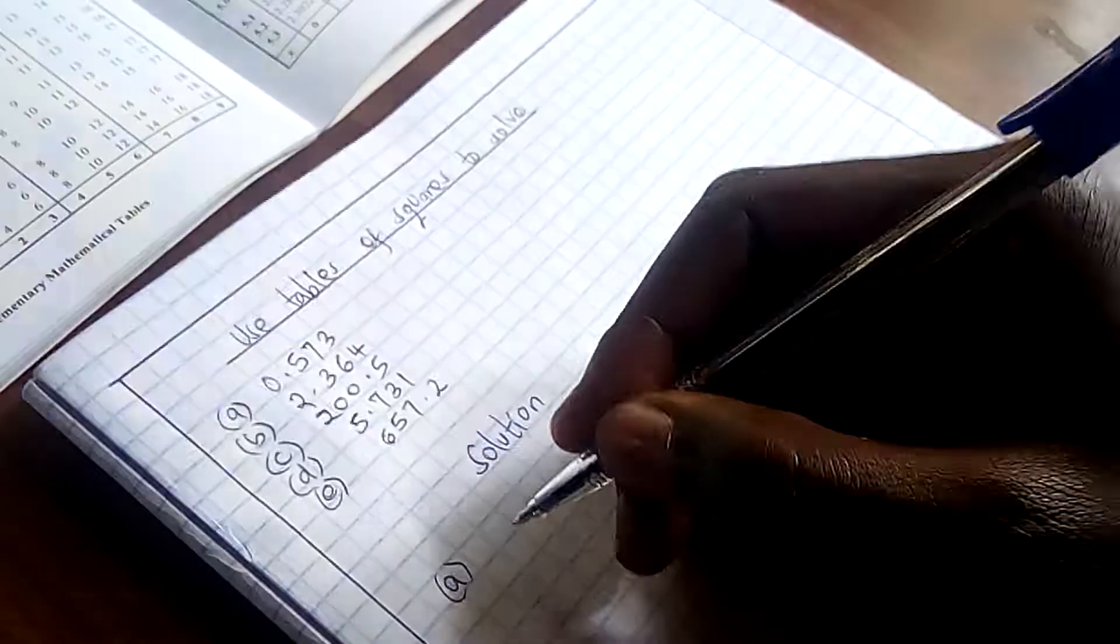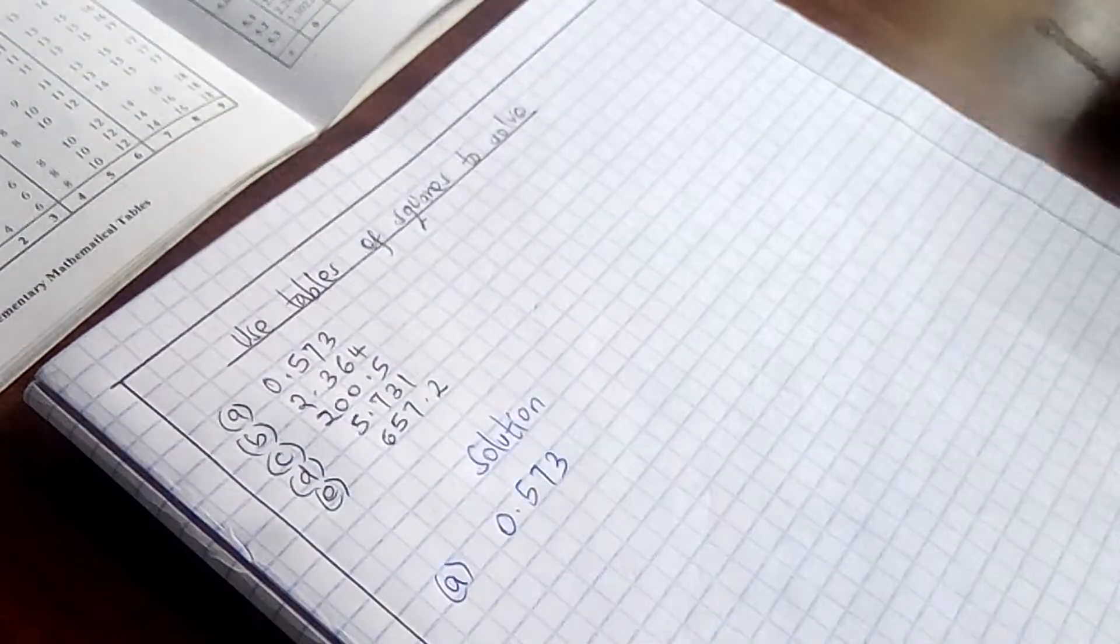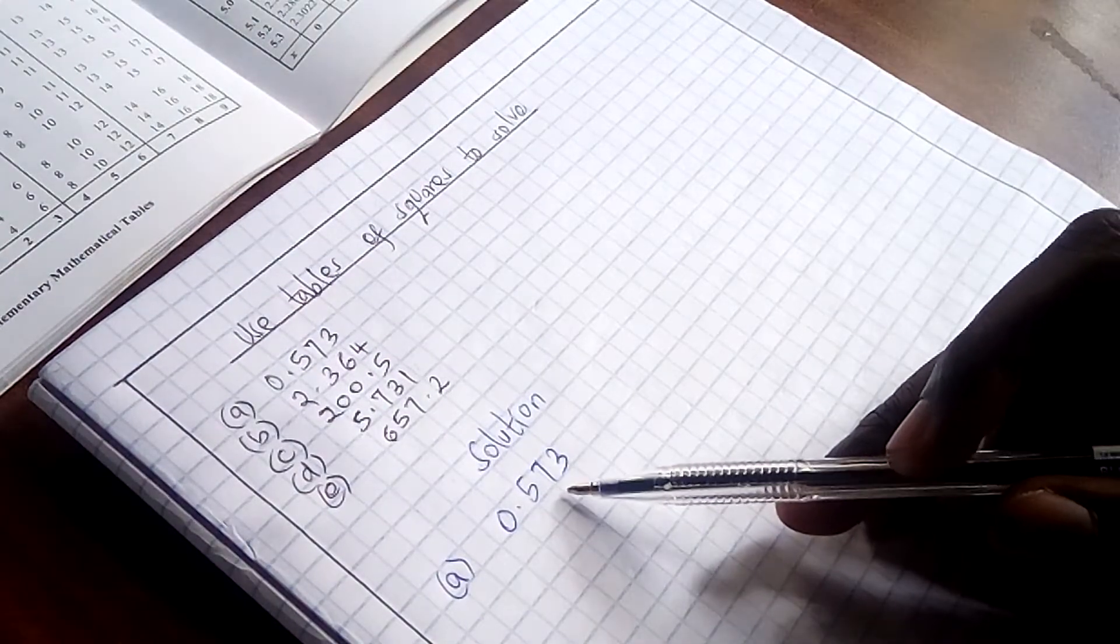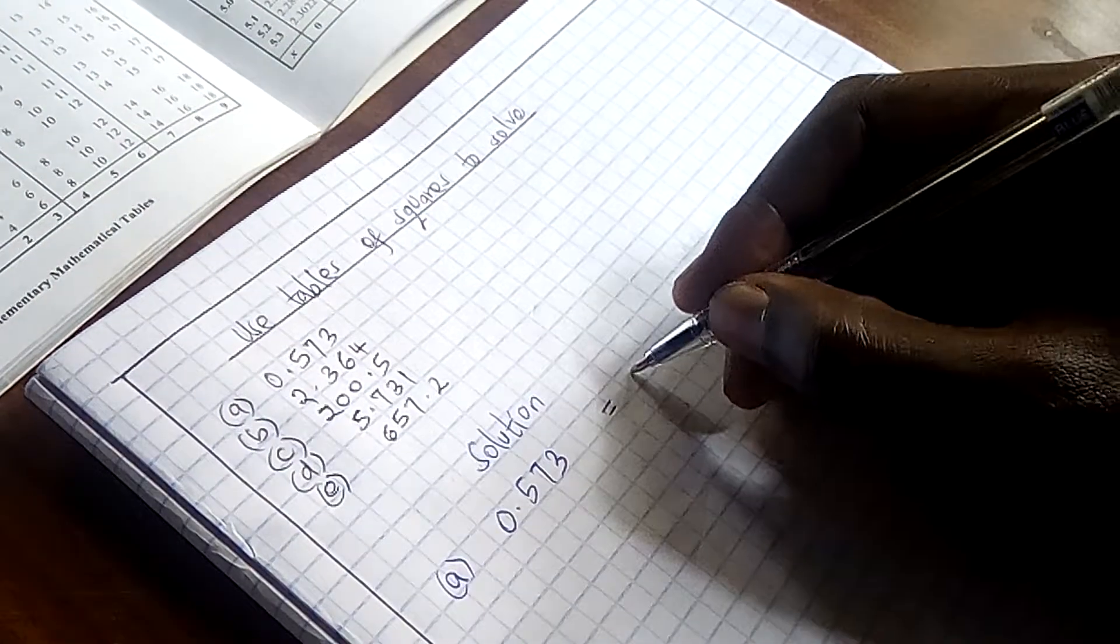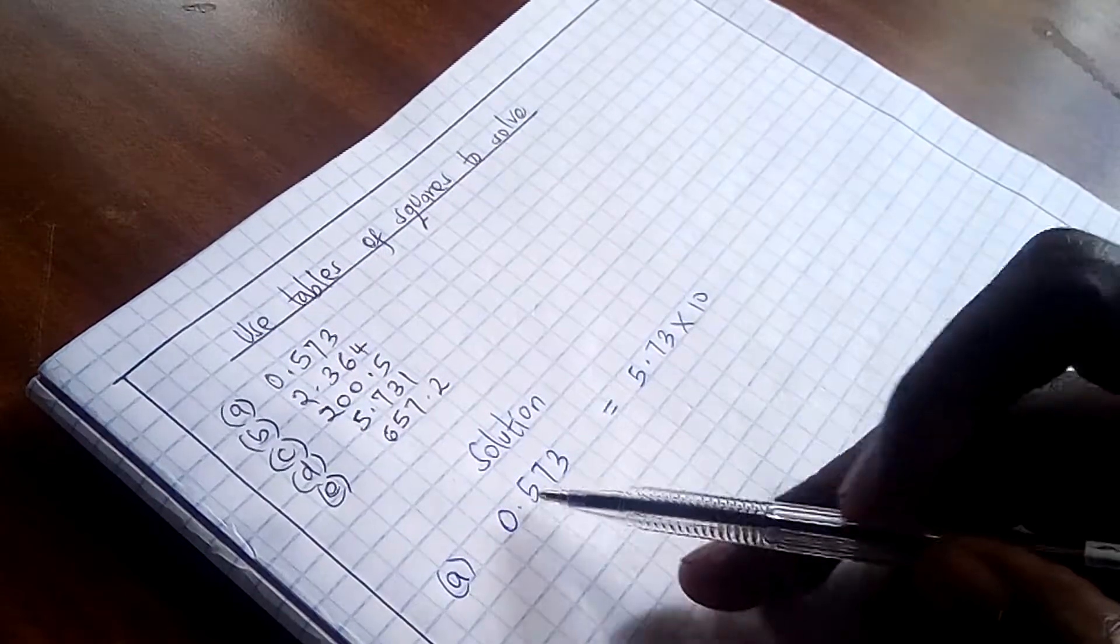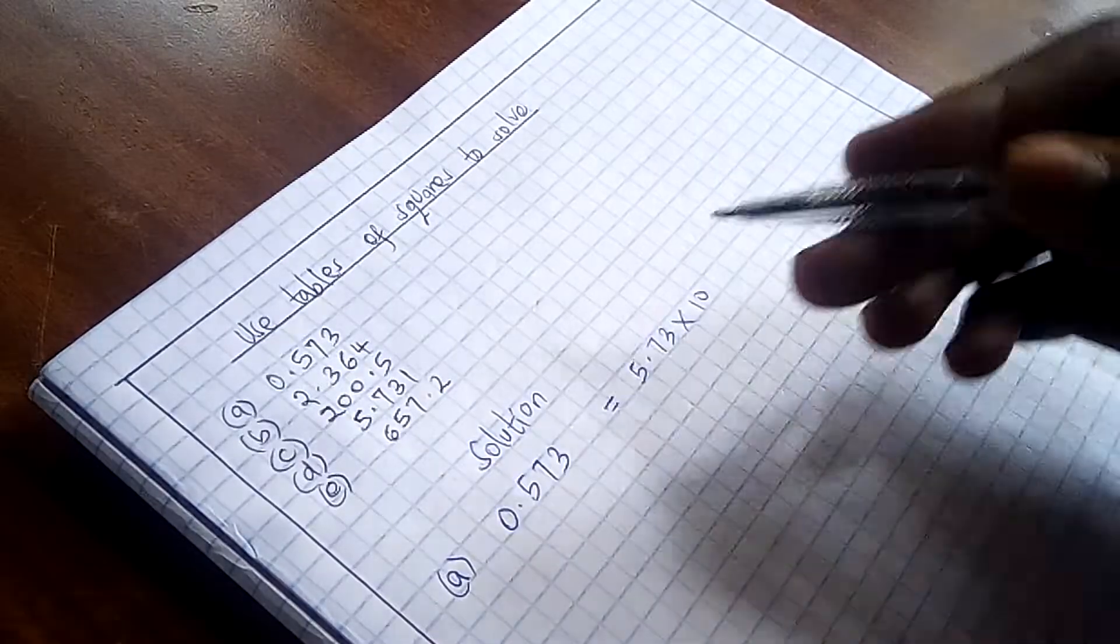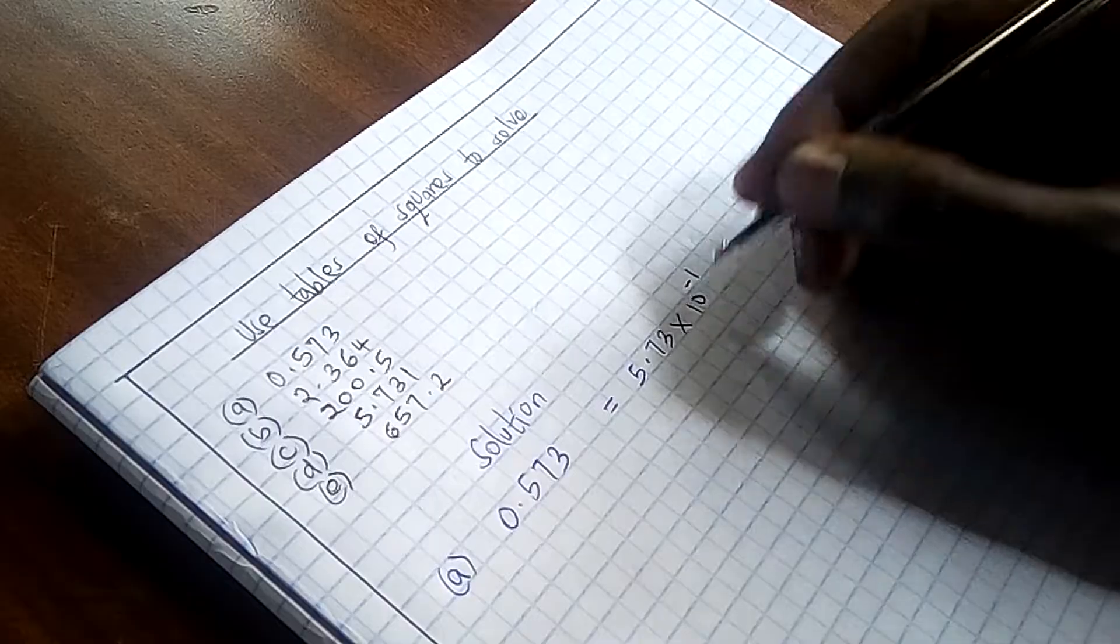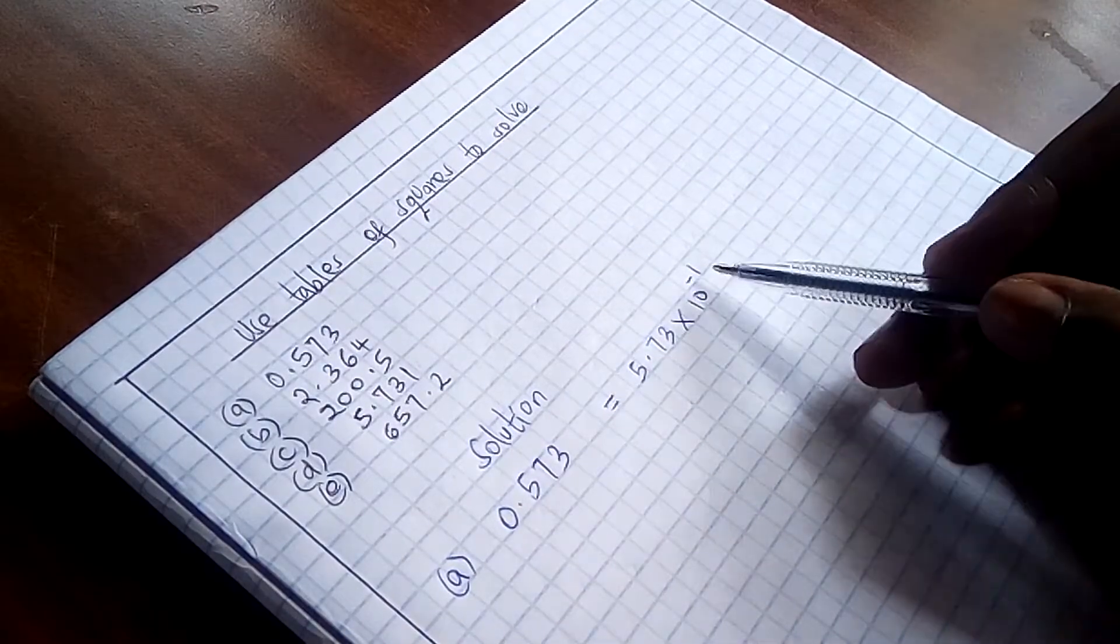So for the first part, we have 0.573. This number, we are first of all going to write it into standard form. And this is going to be 5.73 times 10. Because we have moved only one step from left to right, we have negative one. So it is 5.73 times 10 raised to power negative 1.